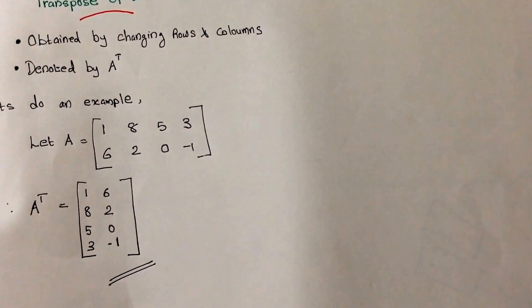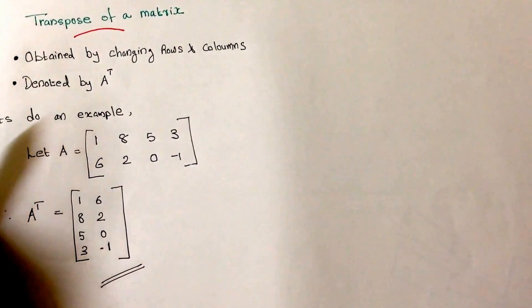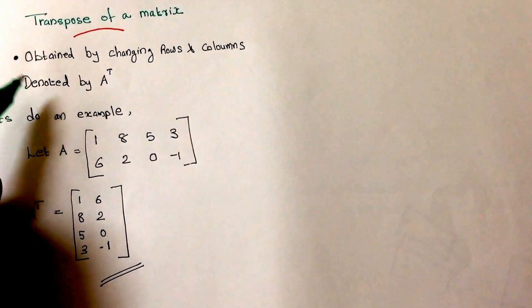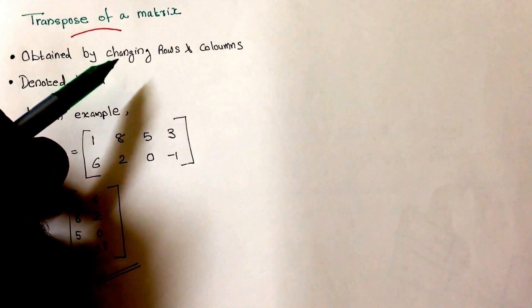Hi folks, welcome to my video on how to find the transpose of a matrix. Basically, it is obtained by changing rows and columns. That is the basic principle for a transpose of a matrix.